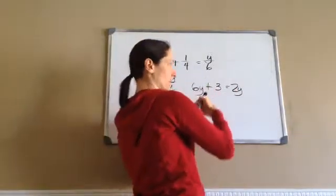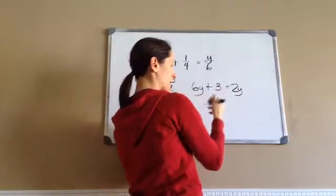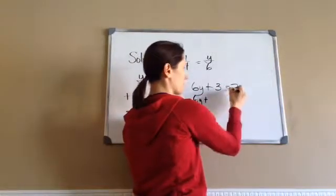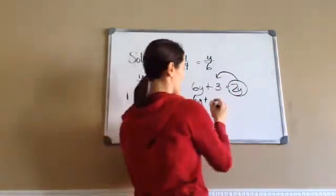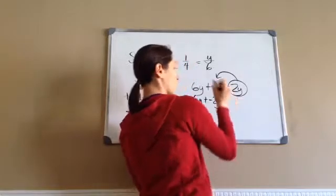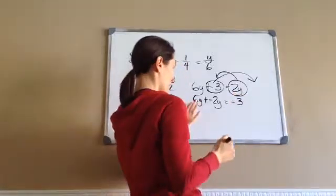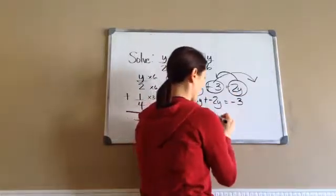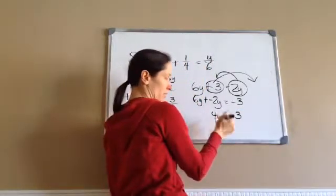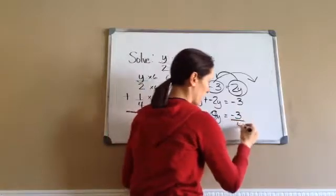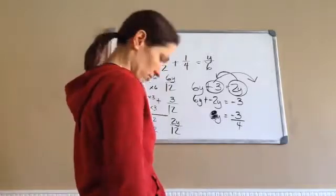We want to try to get the Ys on one side and the numbers on the other. So 6Y, and I'm going to move this 2Y across the equals, so since it is a positive 2Y, it's going to become a negative 2Y. And then this plus 3, I'm going to move it across and become a negative 3. 6Y plus negative 2 would become 4Y, equals negative 3. So since this is times 4, we're going to divide by 4, and Y equals negative 3 fourths. And that's exactly the answer.